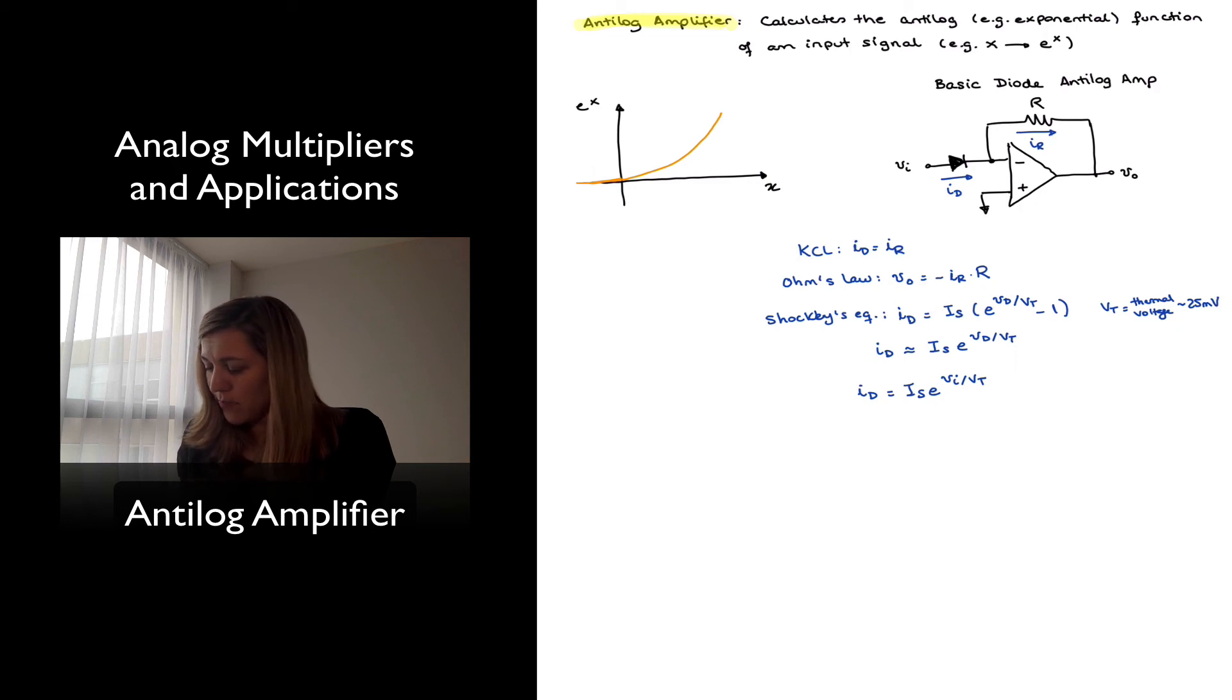Id is, as I mentioned earlier, equal to Ir, and Ir is equal to negative Vout over R. So if I apply my KCL equation, I will have negative Vout divided by R equals Is times e to the Vin over Vt, and therefore Vout is going to be equal to negative Is times R times e to the Vin divided by Vt.